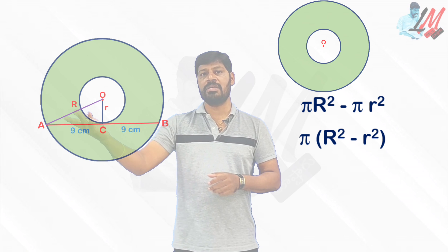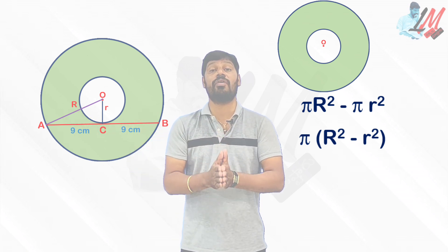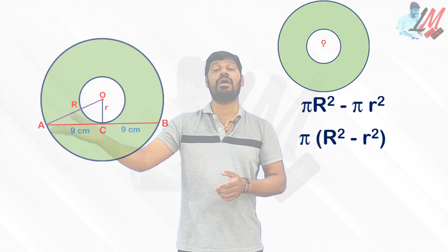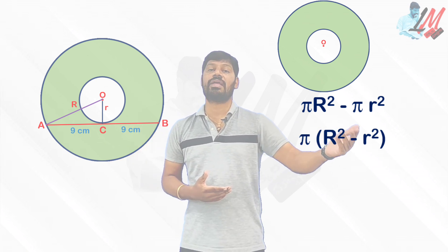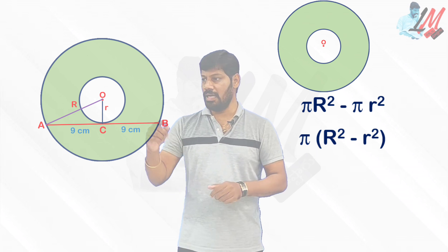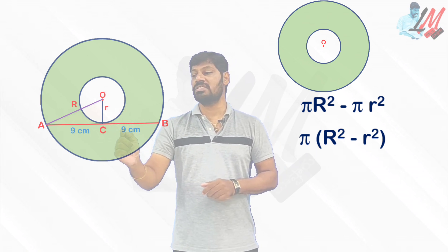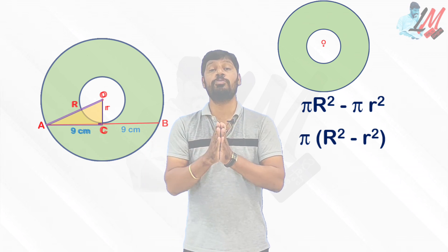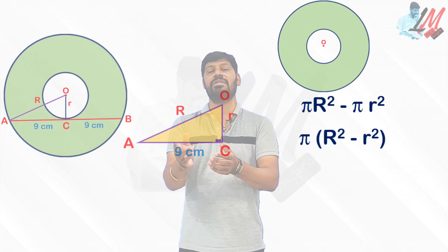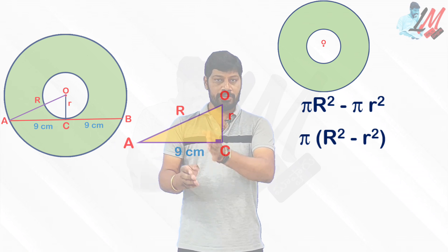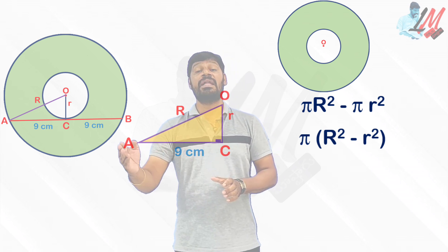We don't know capital R, we don't know small r, yet we are supposed to find the area of the ring. The area of ring formula is π(R² − r²). Observe carefully: triangle OCA is a right triangle. Separating it clearly, capital R is the hypotenuse, small r is one side, and 9 centimeters is the other side.